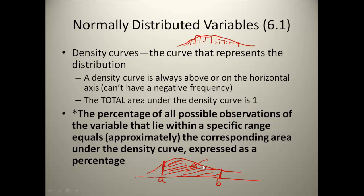So let's say I found this area to be 0.72. That would tell me that approximately 72% of my data values lie between whatever value A and value B. We will come back to this a lot in the sections.